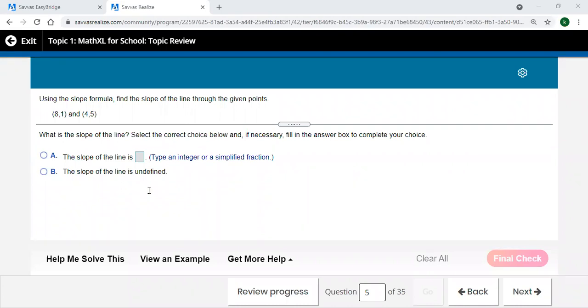All right, we are still working on the Topic 1 review and we are on problem five out of thirty-five. Long ways to go yet, but let's keep at it here, keep moving. So we have two points and they want us to use the slope formula and just find the slope.